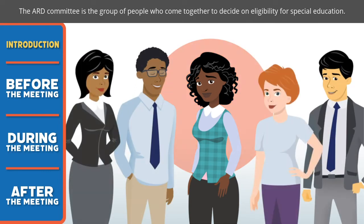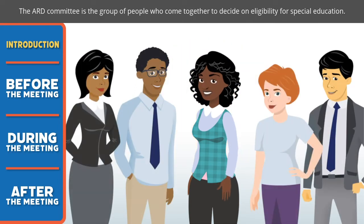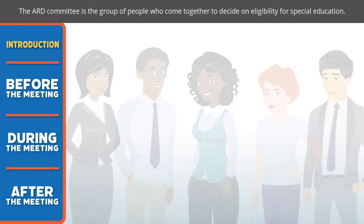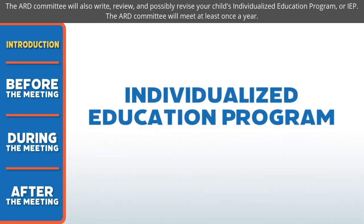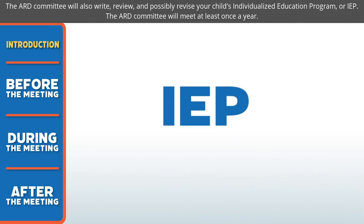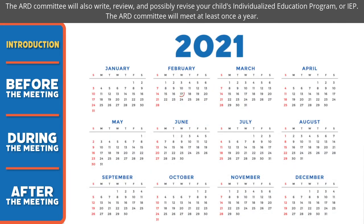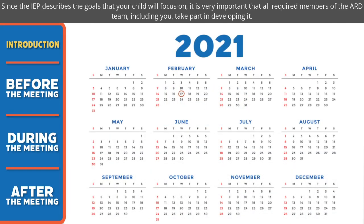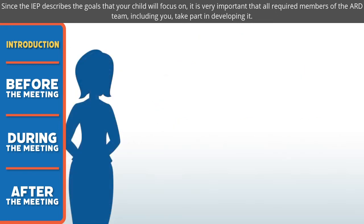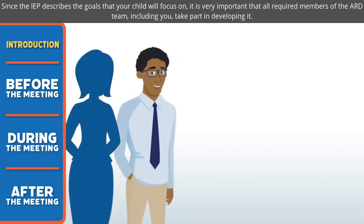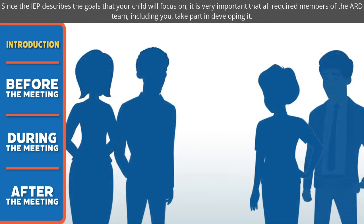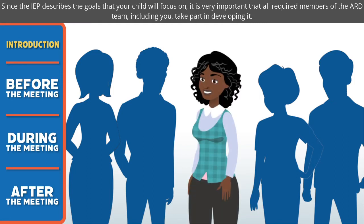The ARD committee is the group of people who come together to decide on eligibility for special education. The ARD committee will also write, review, and possibly revise your child's individualized education program, or IEP. The ARD committee will meet at least once a year. Since the IEP describes the goals that your child will focus on, it is very important that all required members of the ARD team, including you, take part in developing it.